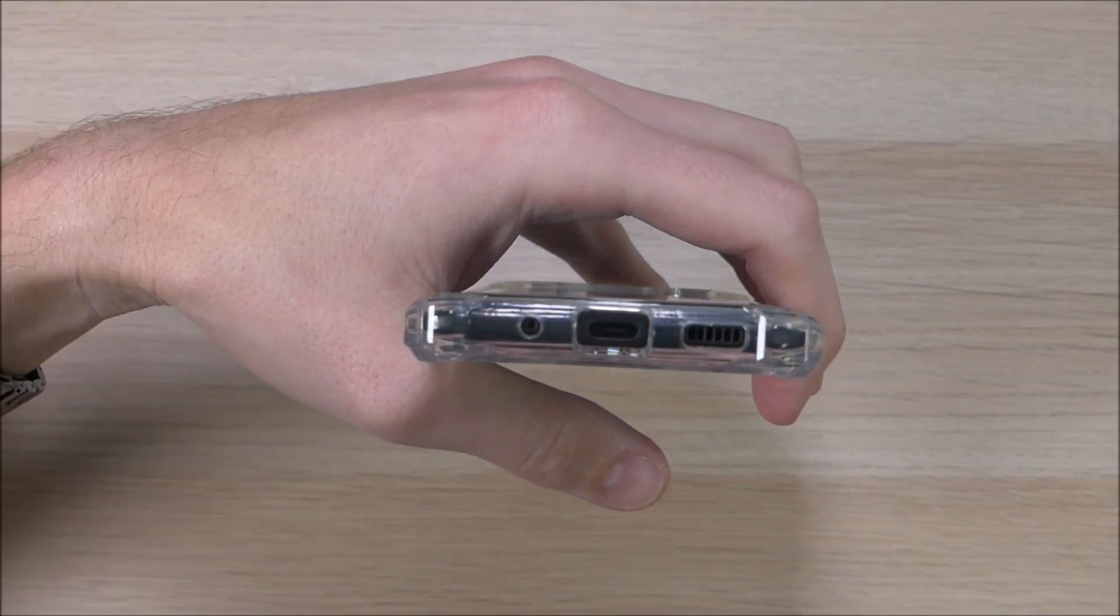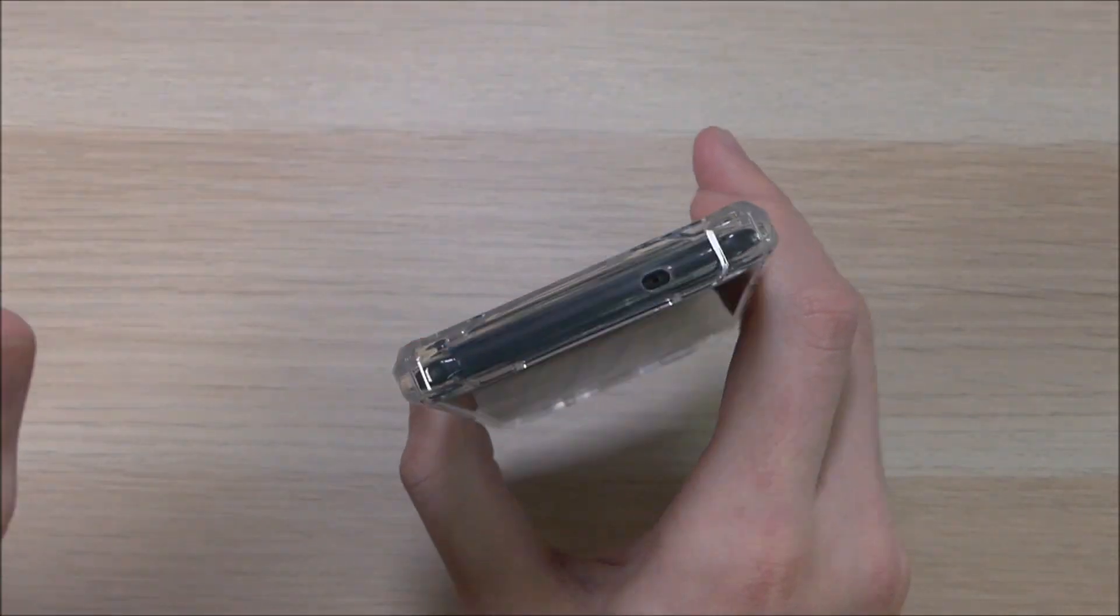Then here on the bottom we have a cutout for your microphone, your USB-C charging port, and your speaker. And here up top we have a cutout for the noise cancelling mic.